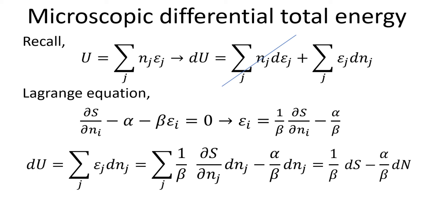We begin with our microscopic definition of the total energy of the system and express the total energy U in terms of its differential form. Since we are only interested in the variation of N, we can eliminate the first term.